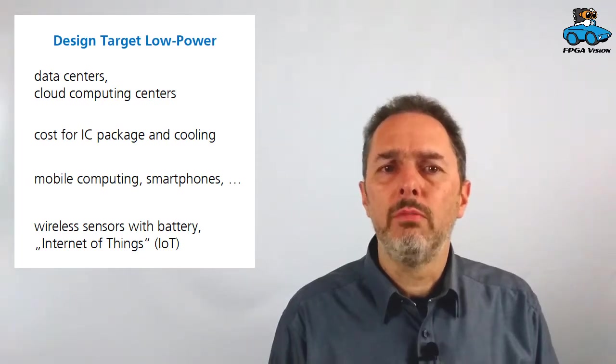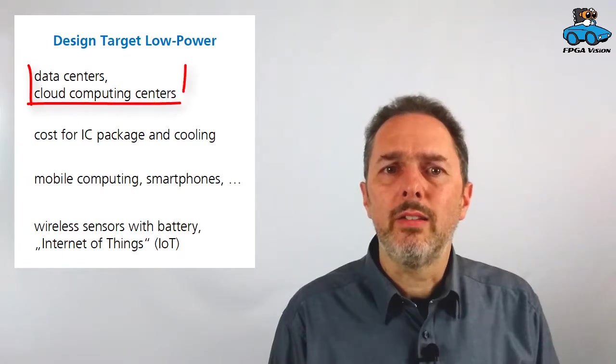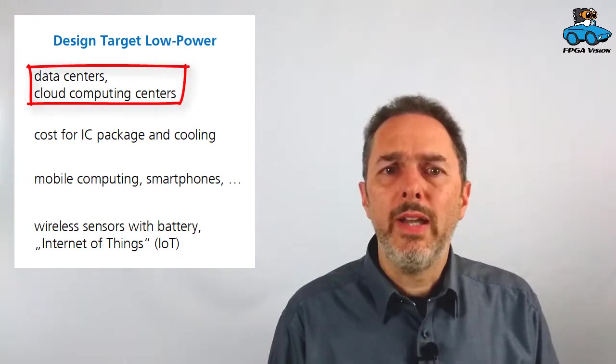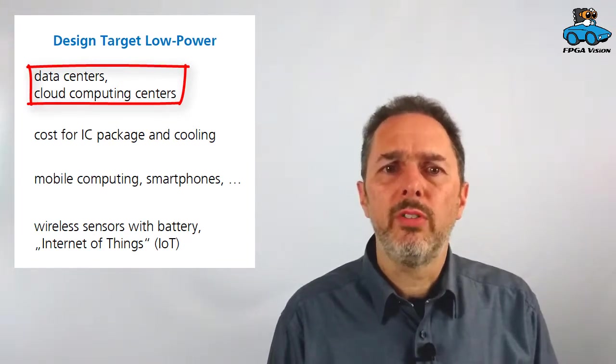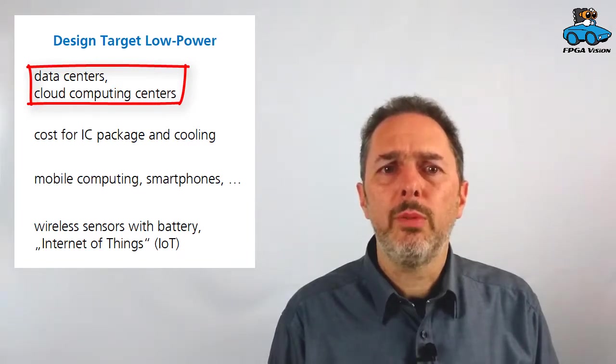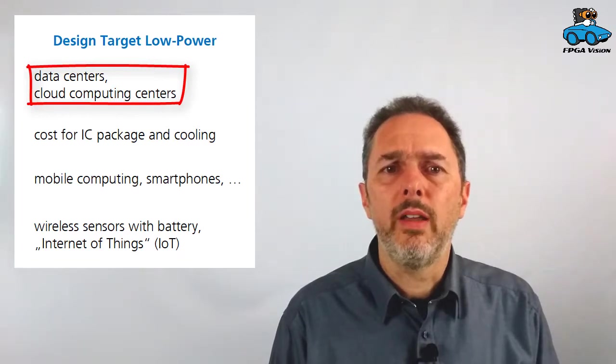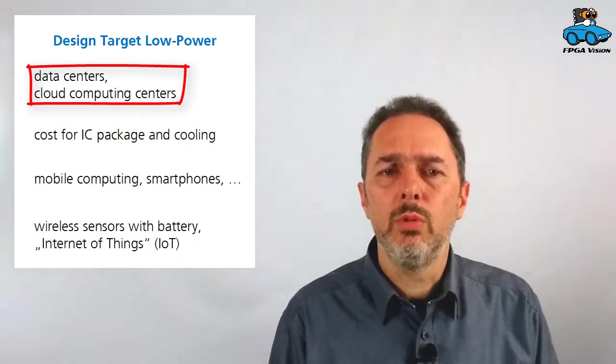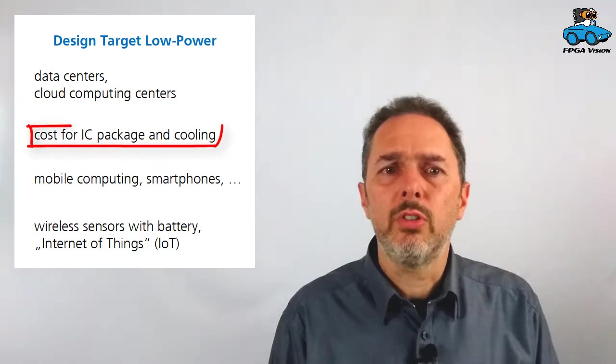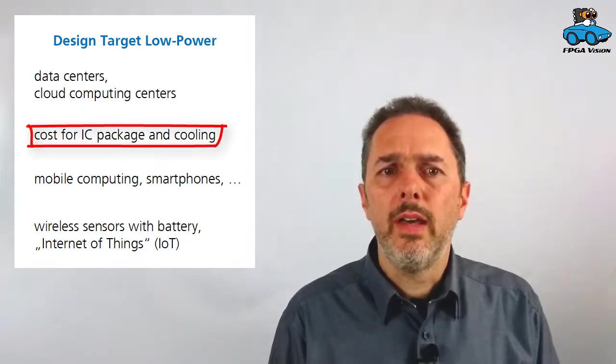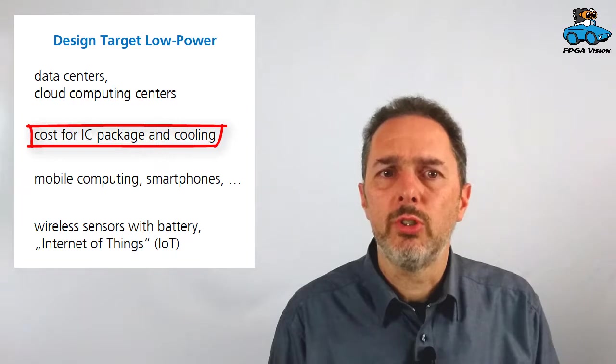So looking more generally, what are the problems? Why do you want to reduce power consumption? There are several reasons. First is cost for supplying the power and for cooling. If you have a look at data centers, cloud computing centers, a major cost factor for these companies is power and cooling. About 40 percent of the costs are only for cooling and supplying the energy. So if you can reduce that, you save a lot of money. Looking at the individual chips, also the cost of the package, the cost of the cooling depends on the power that is produced. If you have cooler chips, then you can take a cheaper package which saves you money.